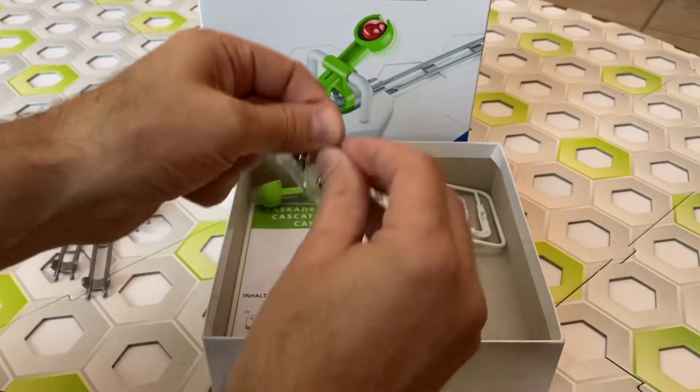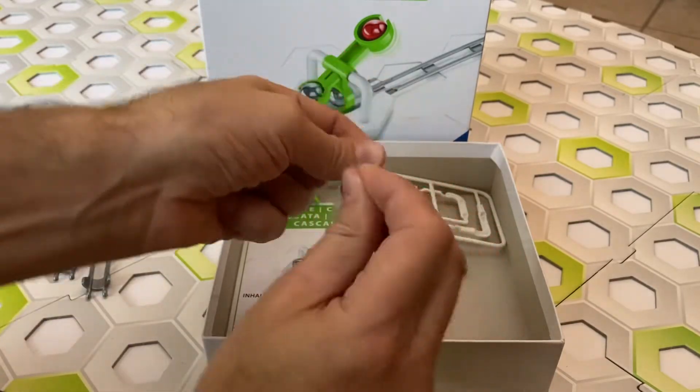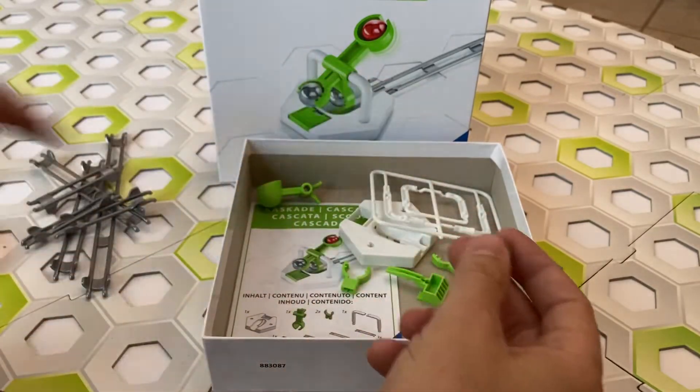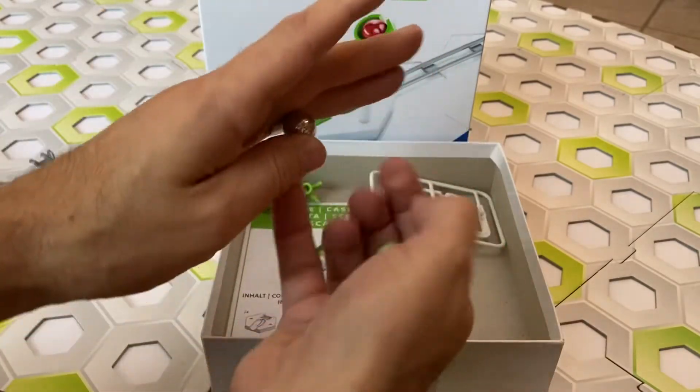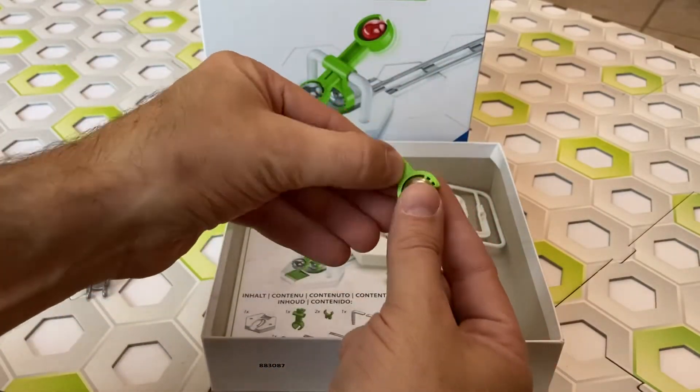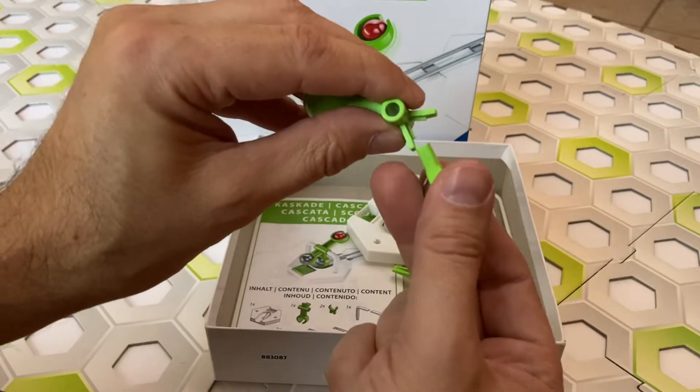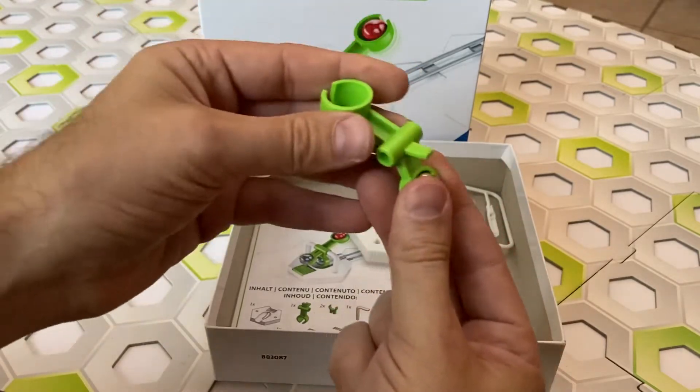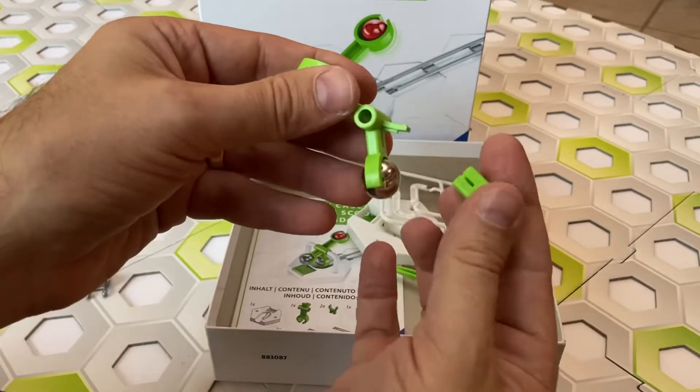You get two GraviTrax marbles, but these are not regular sized marbles. These are larger than normal, and they're used as counterweights in the scoop. These weights will lift your marble up, up to four and a half height tiles in height.